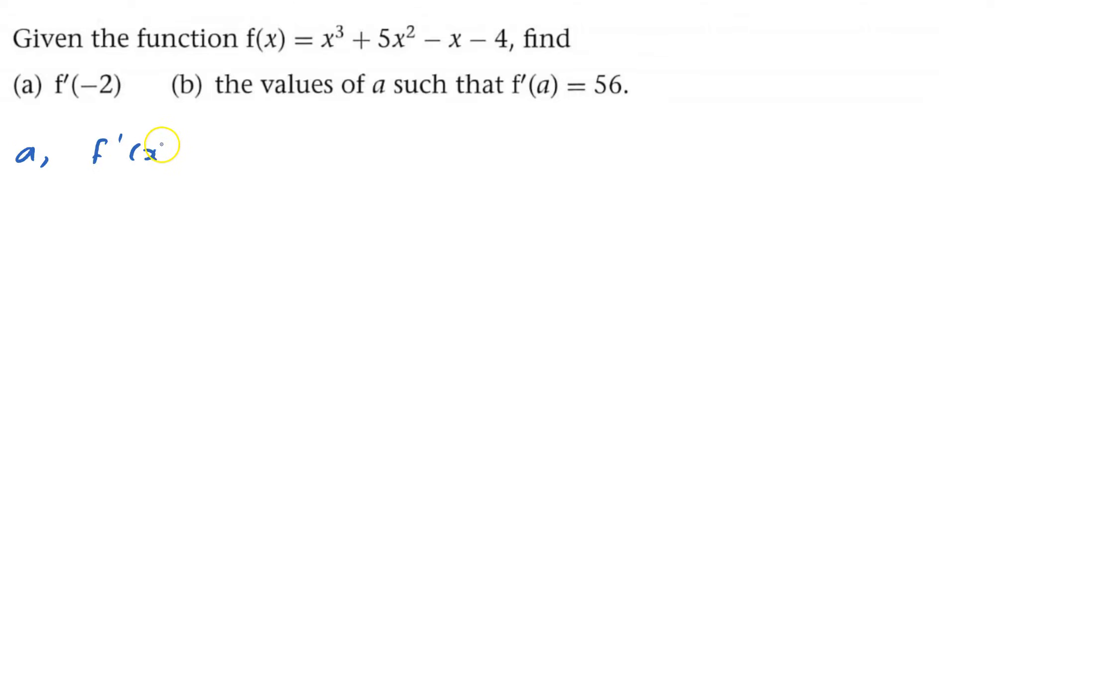So f'(x), differentiate it: 3 comes down to the front, 3x power decreases to x squared. Power comes down to the front, times by 5, so that'll be 10x minus 1. If necessary, you could think that that's being x to the power of 1, and the 1 comes down, minus 1x to the 0, and x to the 0 is 1.